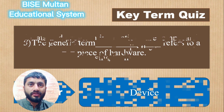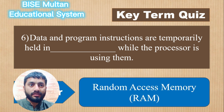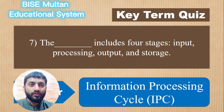Question 6. Data and program instructions are temporarily held in blank while the processor is using them. The answer is Random Access Memory or RAM. Question 7. The blank includes 4 stages: Input, Processing, Output, and Storage. The answer is Information Processing Cycle.